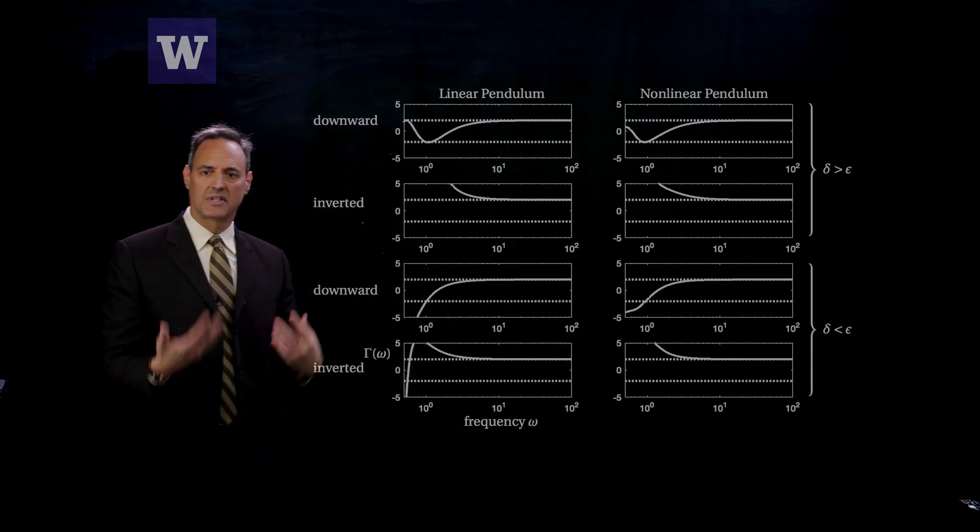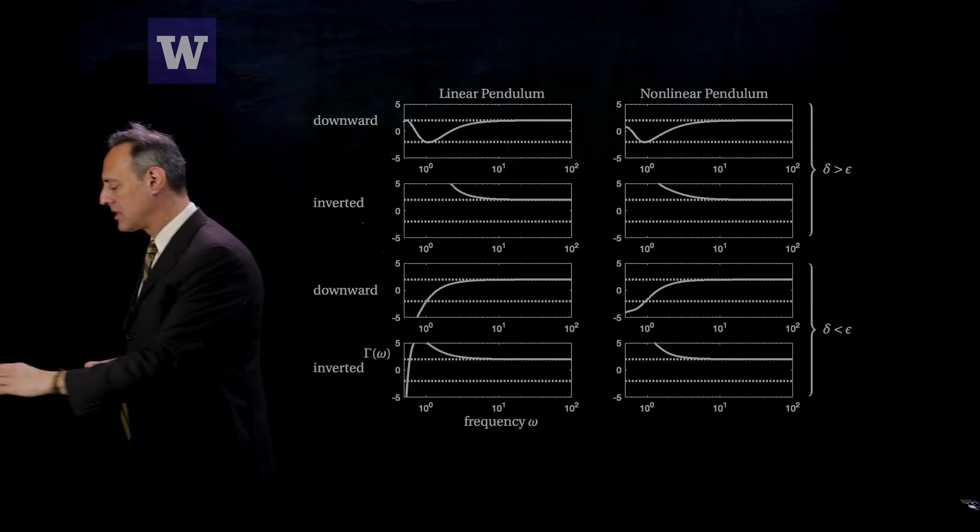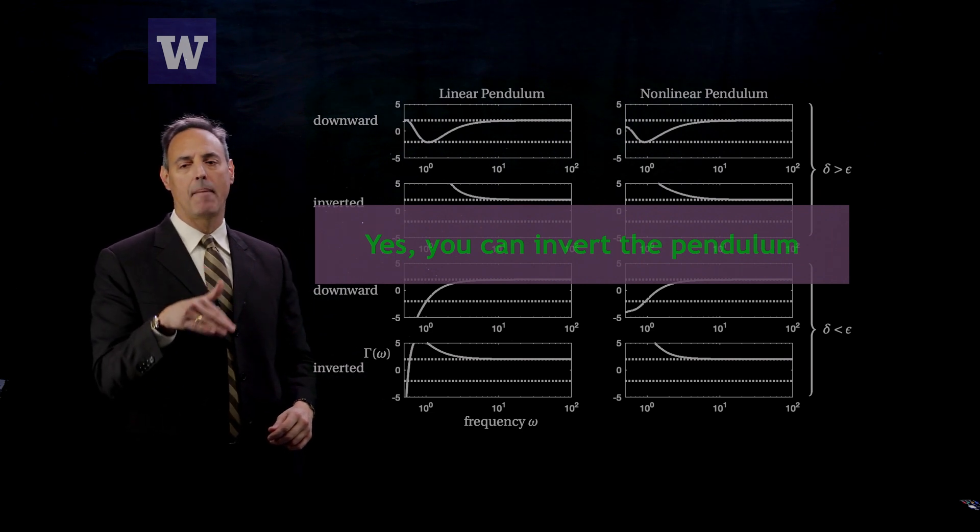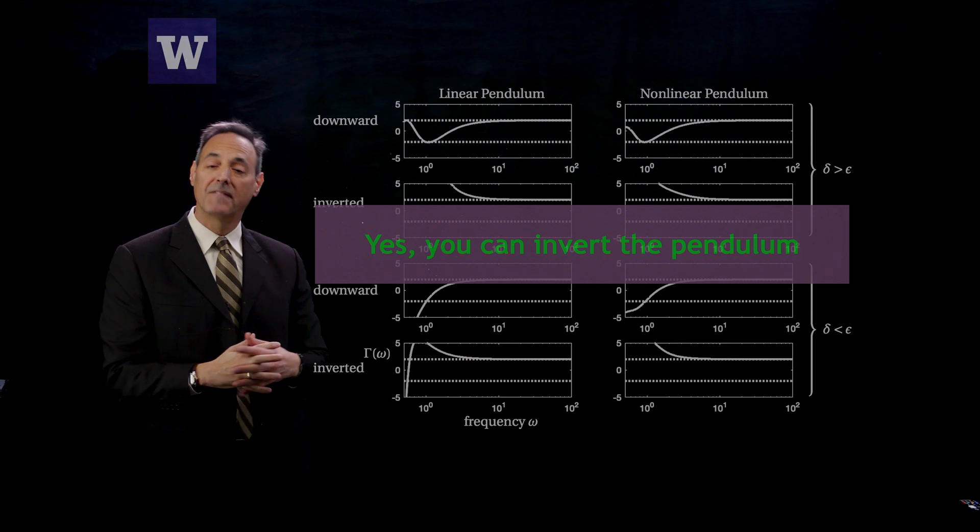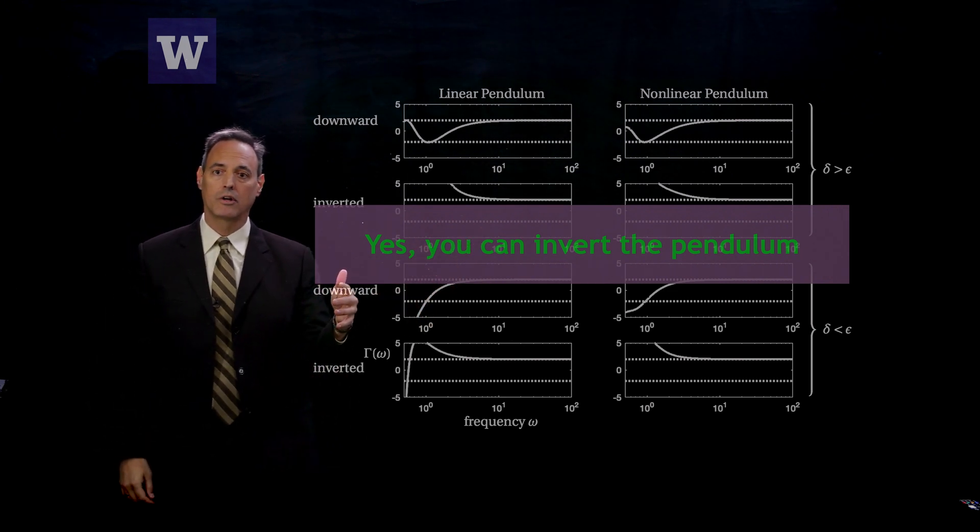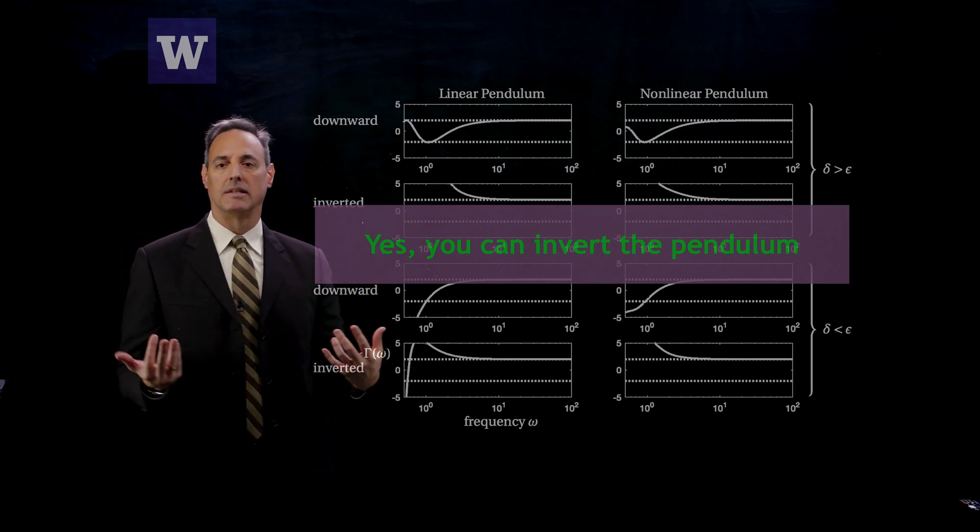So then you do destabilize the pendulum until you get to a critical value of frequency forcing here and here. So this gives you a summary of this, and what it's telling you is something really interesting. You can invert that pendulum just by oscillating it on its support at a sufficiently high frequency. Every single one of these plots show you that if you go past this critical value of that frequency of forcing, you can stabilize the pendulum.